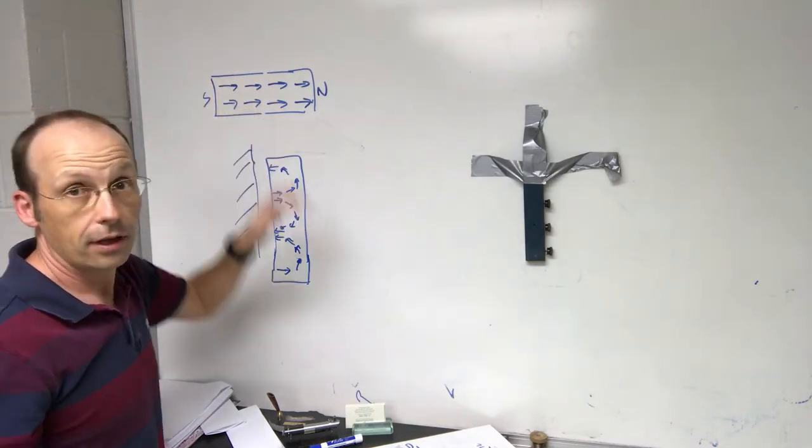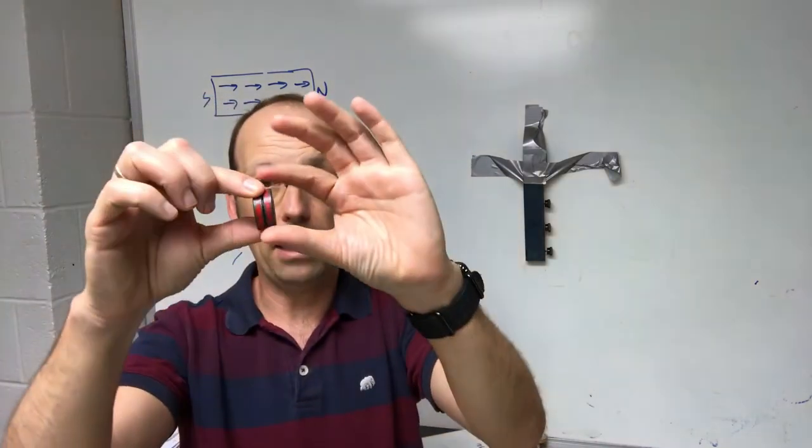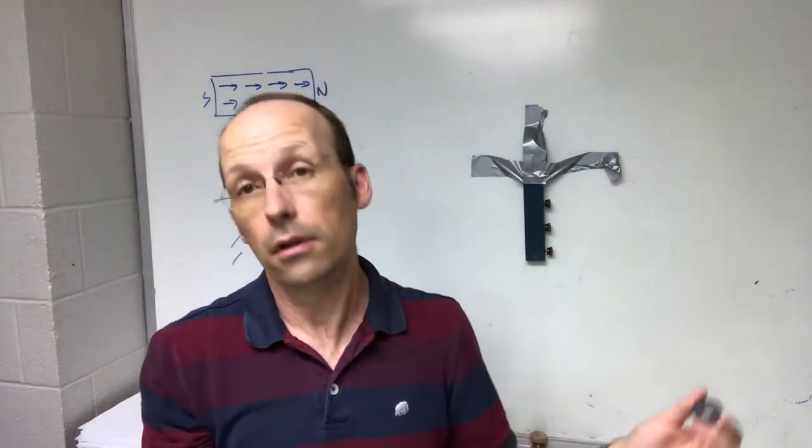And the nice thing is, if I cut this in half—and in fact this is actually two magnets—but if I break in half, then each magnet will also have another north and south pole. So that's one of the cool things about magnets.